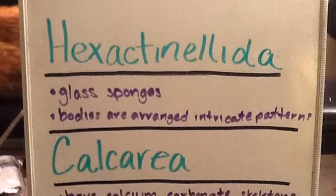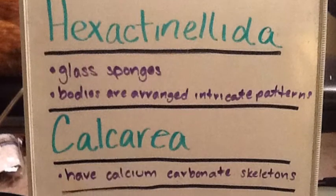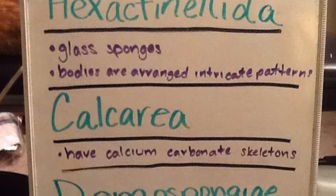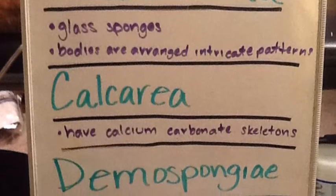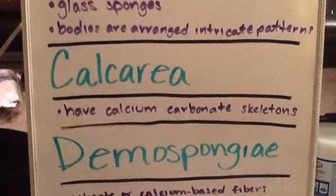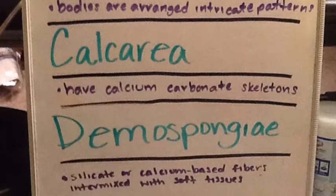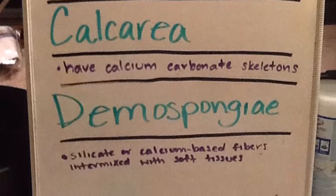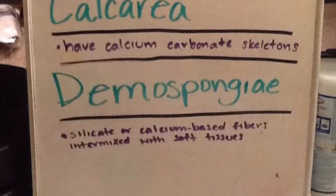Hexactinellida have glass sponges, and their bodies are shaped in intricate patterns. Calcarea have calcium carbonate skeletons. Demospongiae have silicate or calcium-based fibers mixed with soft tissues.